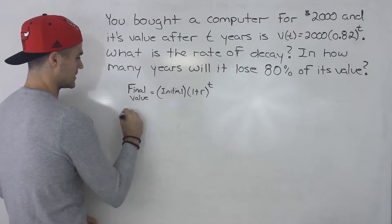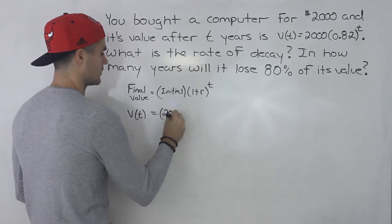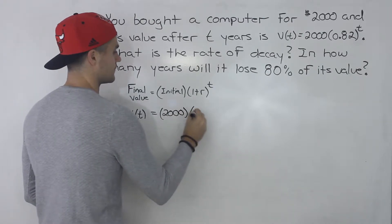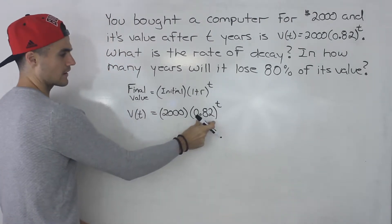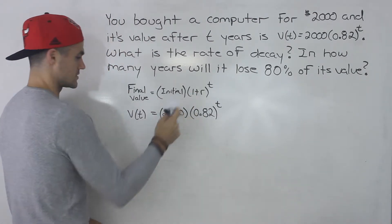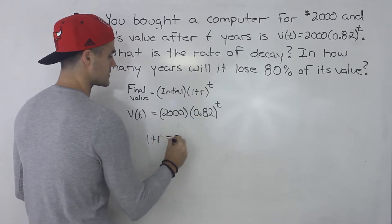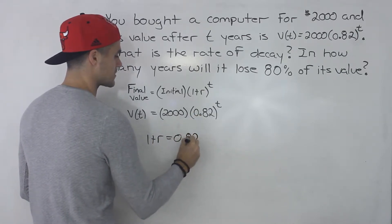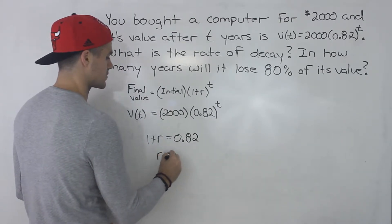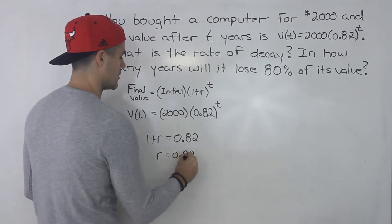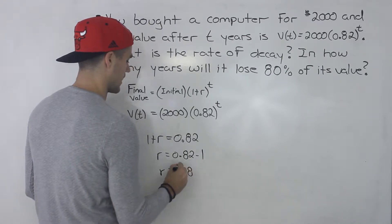So if we take the equation that we have let's put it right under the general equation. Well notice that this bracket here corresponds with that bracket. So basically 1 plus r has to equal 0.82. And when we solve for that r here that will give us the rate of decay. So r would be 0.82 minus 1 which would give us 0.18.